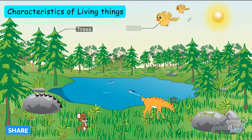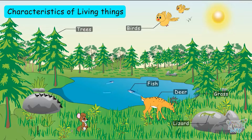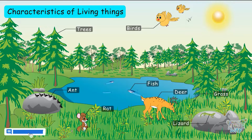There are trees, birds, grass, deer, fish, lizards, ants, rats, and so many living things in the environment.